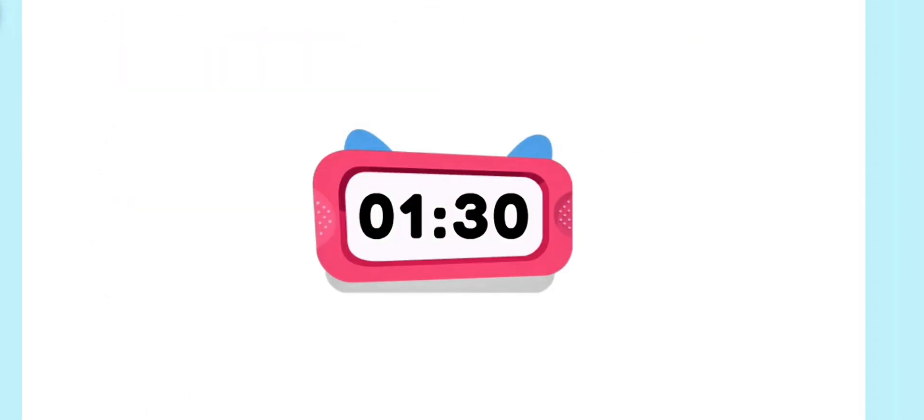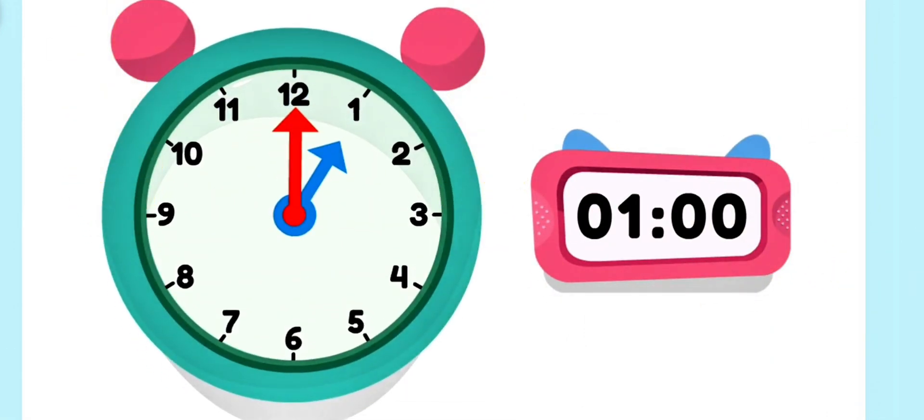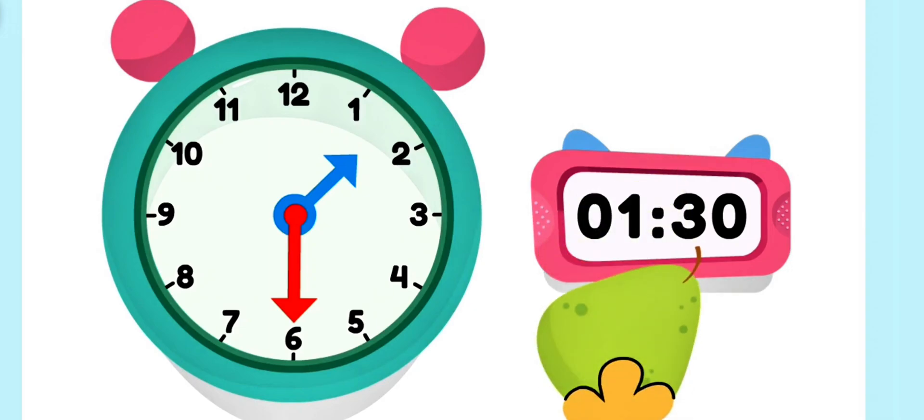Look at this clock! The second number tells us the minutes. It is one thirty. Now check out this clock. The big hand points to the minutes. When the minute hand is here at the twelve, it means the minutes are zero. Now let's move the minute hand to the six. When the minute hand is here at the six, it means the minutes are thirty. Now it's one thirty. It's snack time!